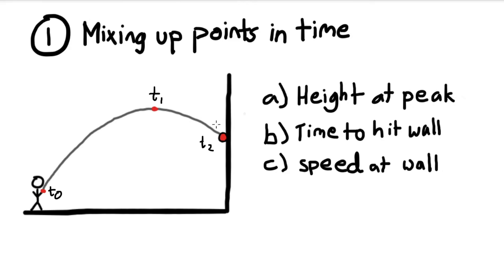If we start with part A, and we just call this v-initial and v-y-final at these two spots, but once we get to part B, we have to redefine our final to be here so we can solve for the time to hit the wall.